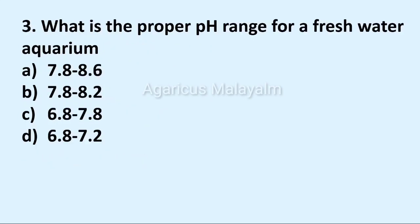Third question: What is the proper pH range for a freshwater aquarium? Answer options: Option A 7.8 to 8.6, Option B 7.8 to 8.2, Option C 6.8 to 7.8, Option D 6.8 to 7.2. Correct answer: Option C 6.8 to 7.8.